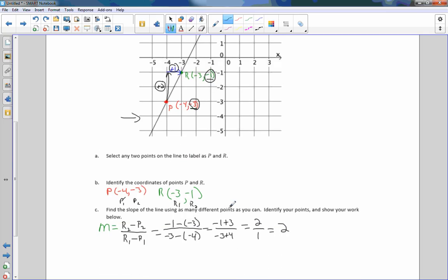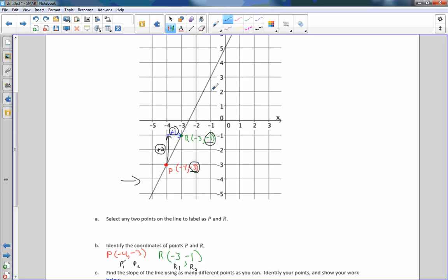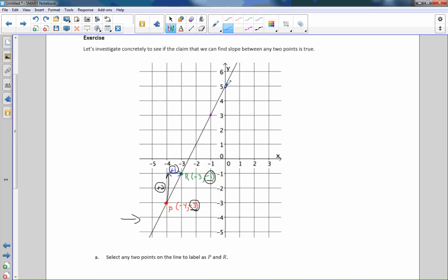So I wanted to explain how to find the slope using as many different points as you can. Now they want us to pick more points and show your work below. So other points we could have chosen were, I'll just do one more. I could have chosen this point here and this point here, two consecutive integers on that line. This is the point negative 1 comma 3, and this is the point 0 comma 5.